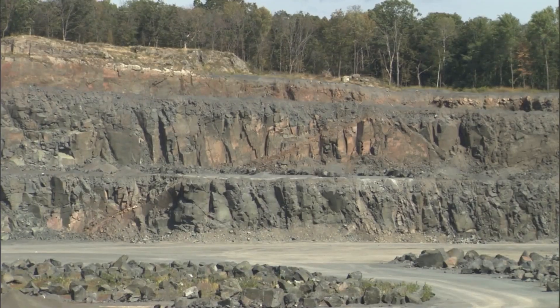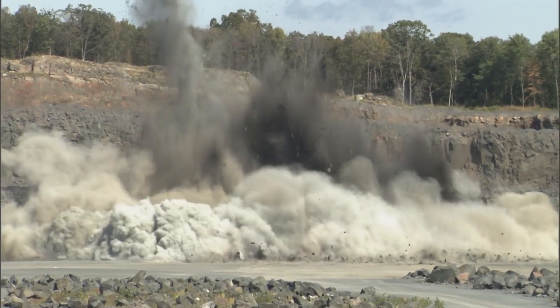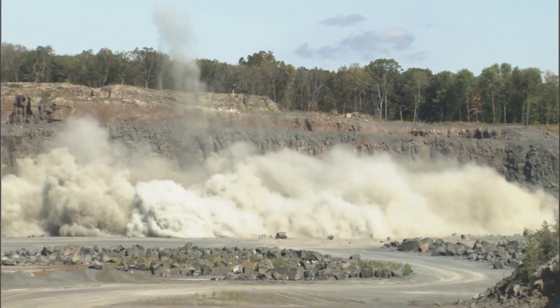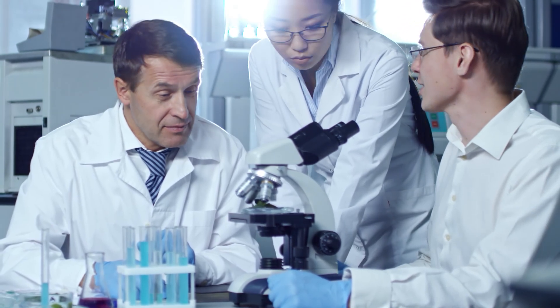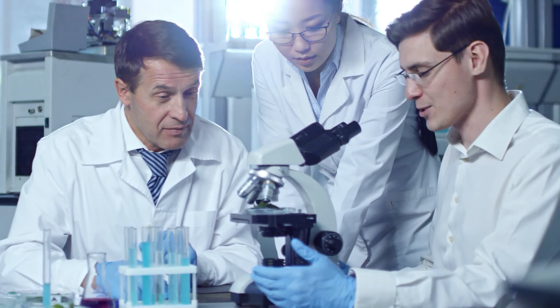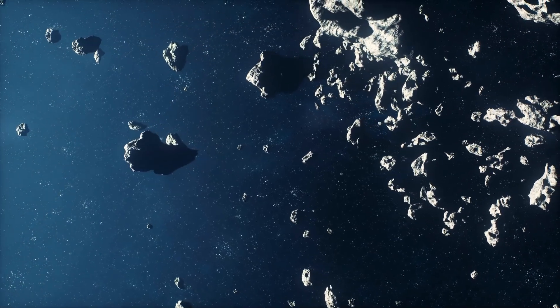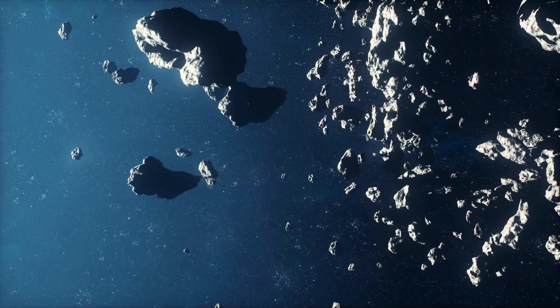Let's start with the big guns, nuclear deflection. Now, this isn't about blowing an asteroid to smithereens like in the movies. Instead, it's about setting off a nuclear explosion near the asteroid to gently push it onto a different path. It's like giving the asteroid a little nudge away from Earth. This could be a game-changer for dealing with big asteroids, but it's also a bit controversial. There's the whole unpredictability of nuclear blasts in space and the risk of breaking the asteroid into smaller, yet still dangerous pieces.